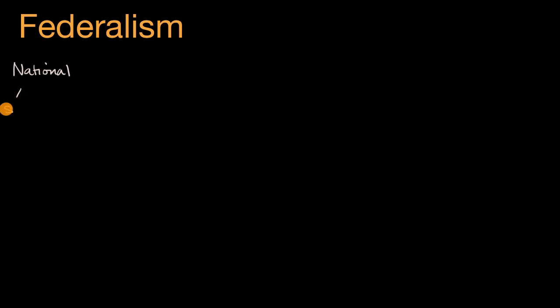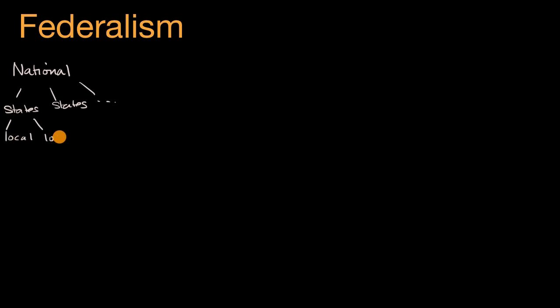Federalism refers to a government that has various layers, where you could have the national government — often known as the federal government — and then you have the states, multiple states, and then you could have even further layers. In the United States you indeed do: you have the local governments, and even within the local you have city governments and county governments.